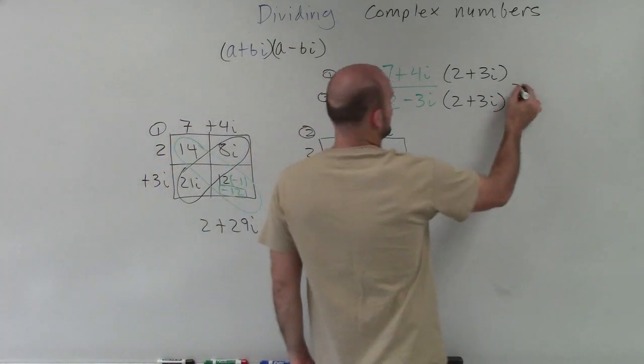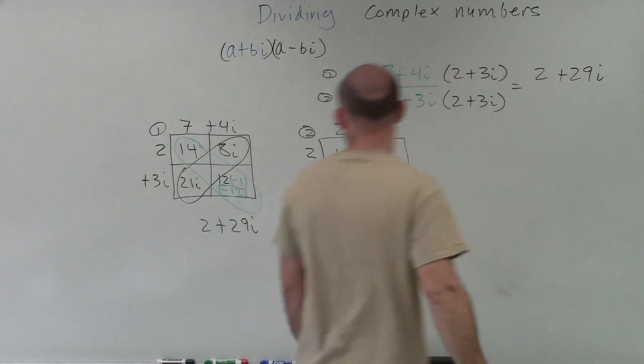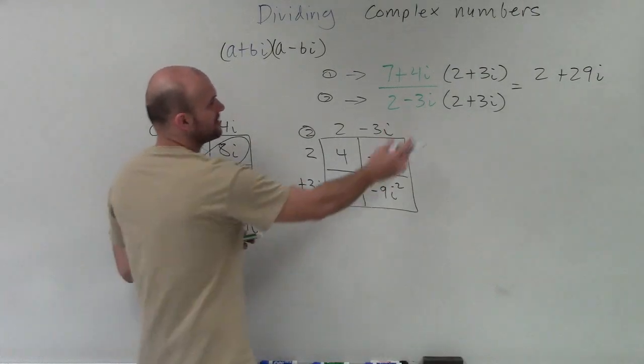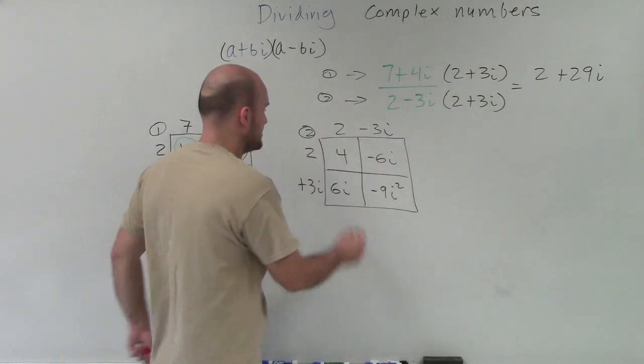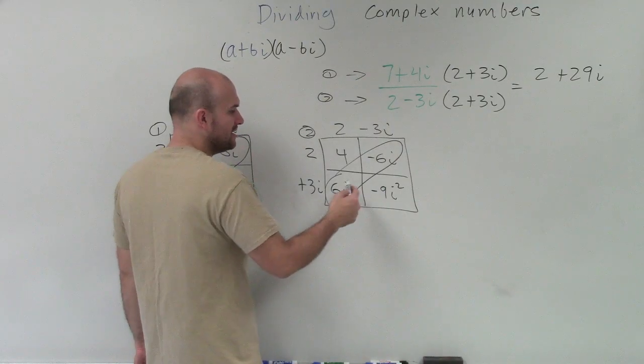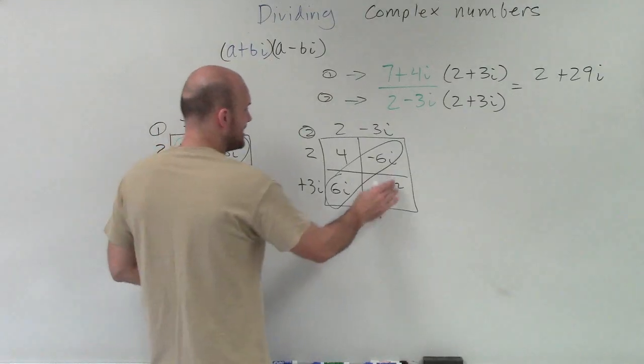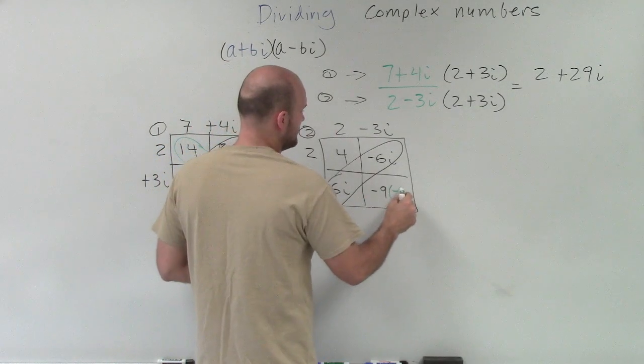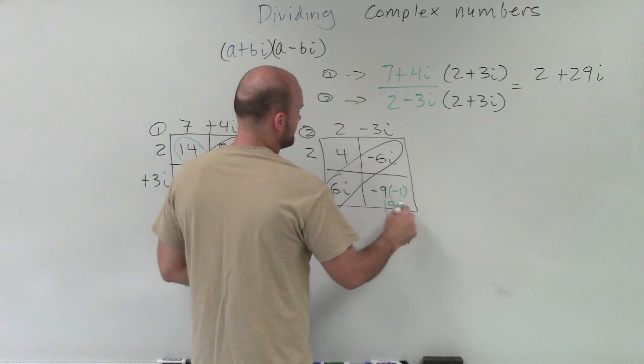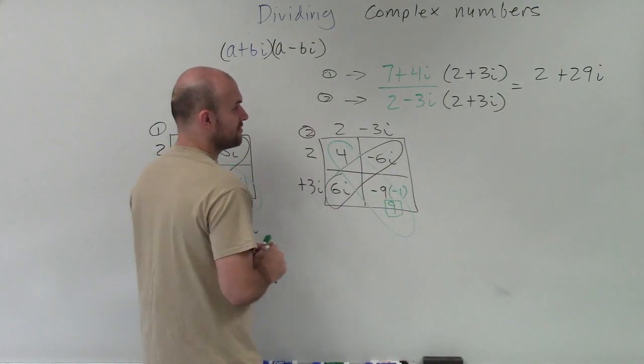So as I multiply these, I have 2 plus 29i. That's my new numerator by multiplying this product, that's what I got. Now, the nice thing about the denominators and the reason why we have to multiply by our conjugate is you can notice that our middle terms now add up to 0. So I don't even have to worry about them. Because 6i minus 6i is 0i, which would be 0. Then I rewrite my i squared as negative 1. And then negative 9 times negative 1 is now going to be positive 9. And you can see 4 plus 9, I can now combine these, is just going to leave me with 13.